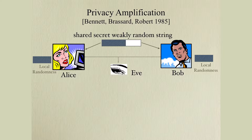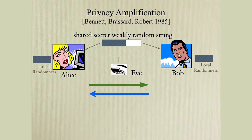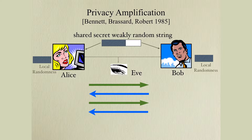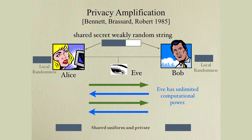These two parties also have a shared weakly random string, which is just a weak random source. The goal is to communicate between the channels so that eventually the two parties will end up with private and uniform random strings, from which they could do cryptographic tasks like one-time pad. We also assume these two parties have local uniform random bits, but those are not shared. The big question is how to convert the shared weak random secret into a shared, uniform, private random string.